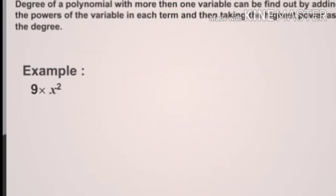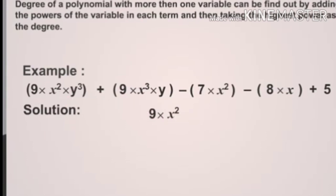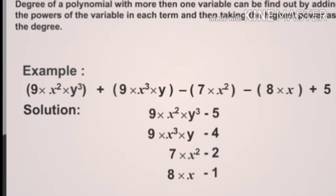Example b: 9x²y³ + 9x³y − 7x² − 8x + 5. Solution: the sum of powers of 9x²y³ is 5; 9x³y is 4; 7x² is 2; 8x is 1. Hence, the degree of the given polynomial is 5.